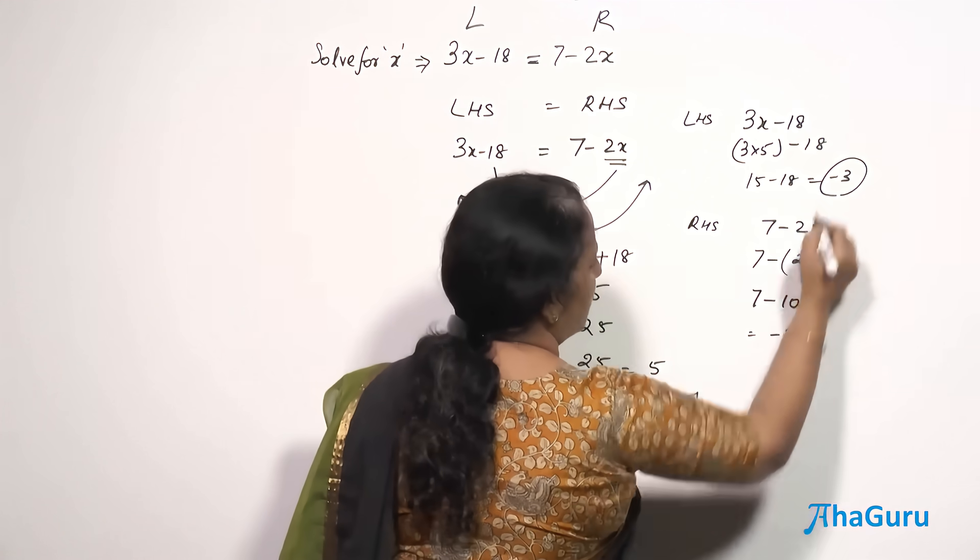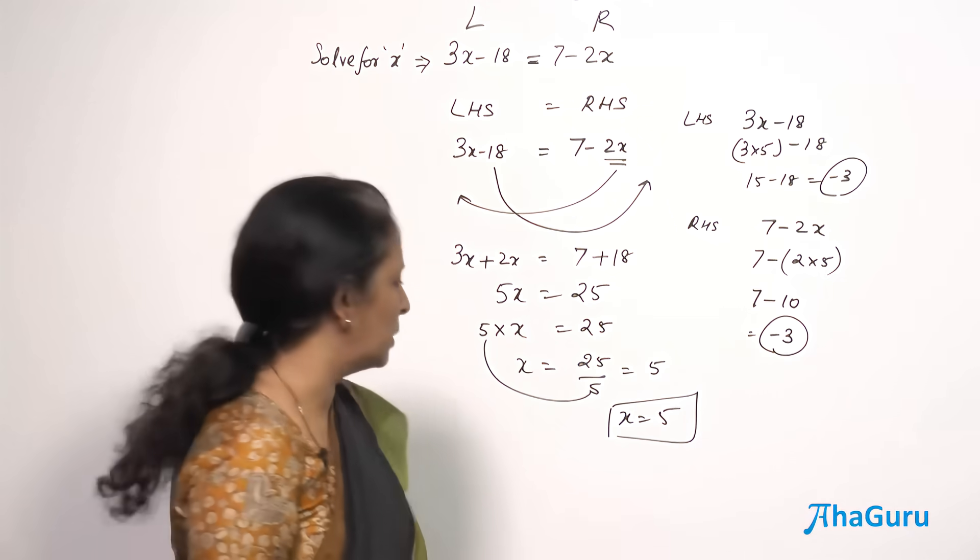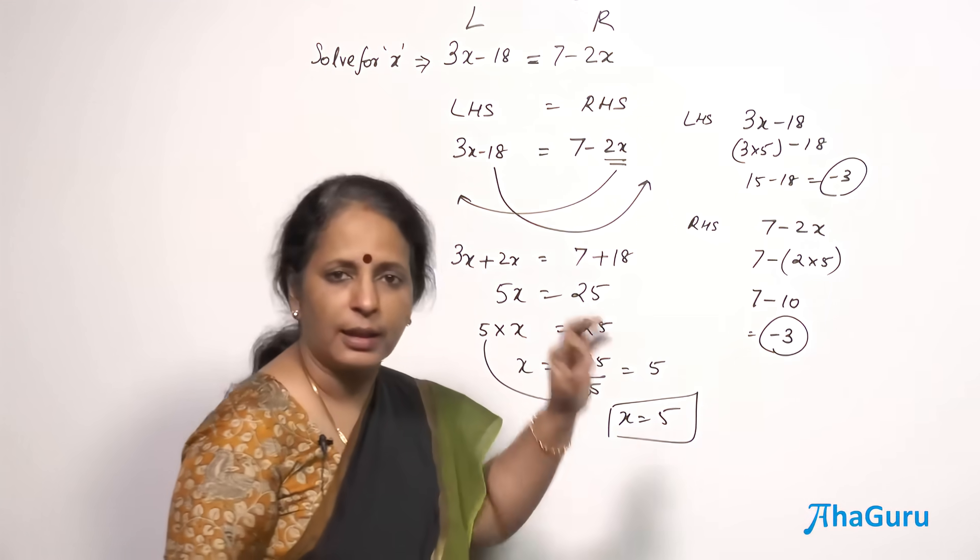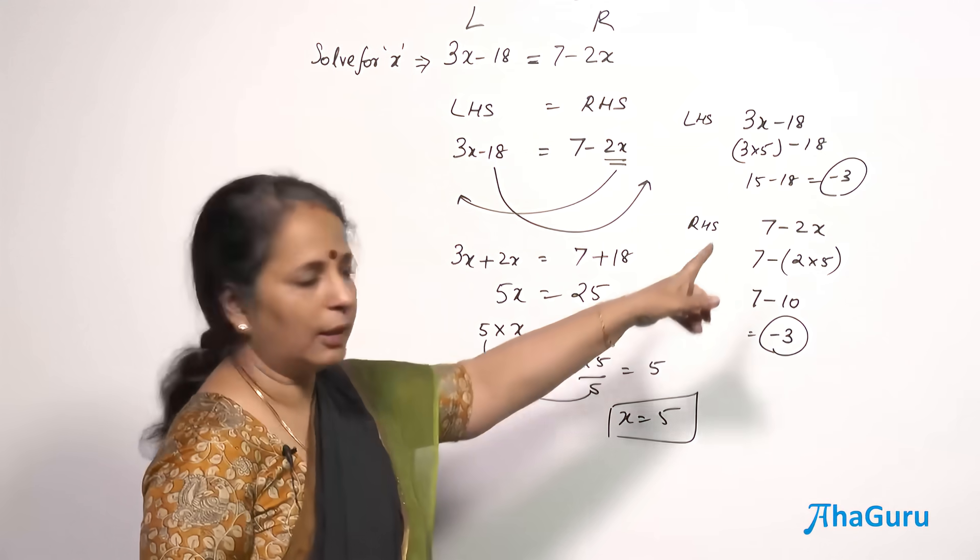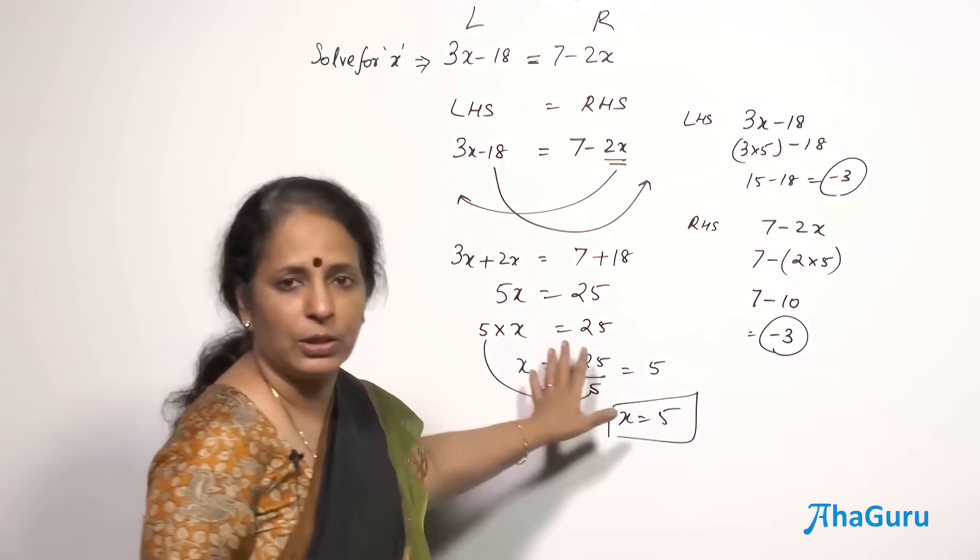So your LHS was minus 3. Your RHS is also minus 3. That means the answer you got x is equal to 5 is correct. Only for this value of x, it has satisfied the equation. So you do not have to worry about this. Your calculation is correct.